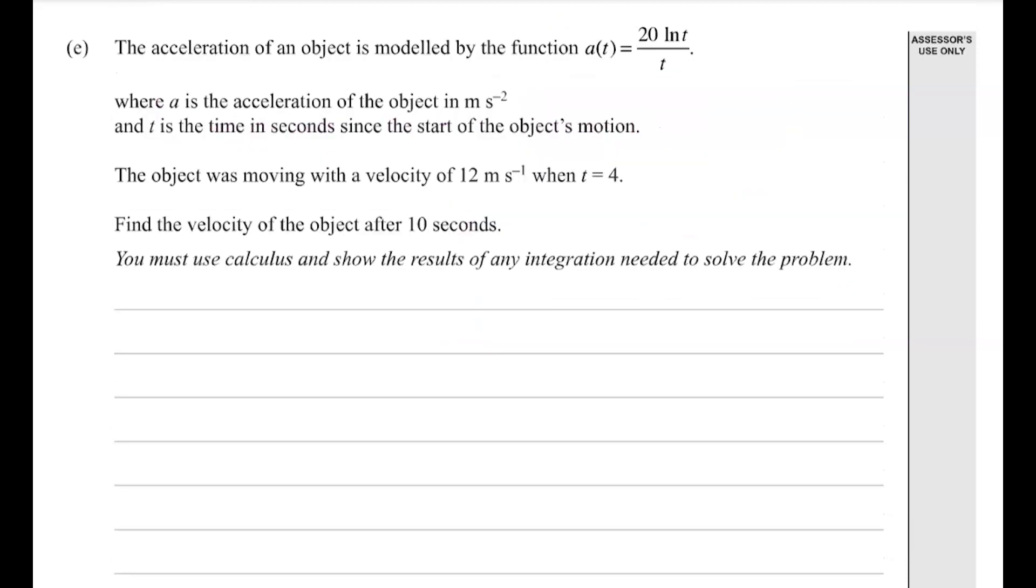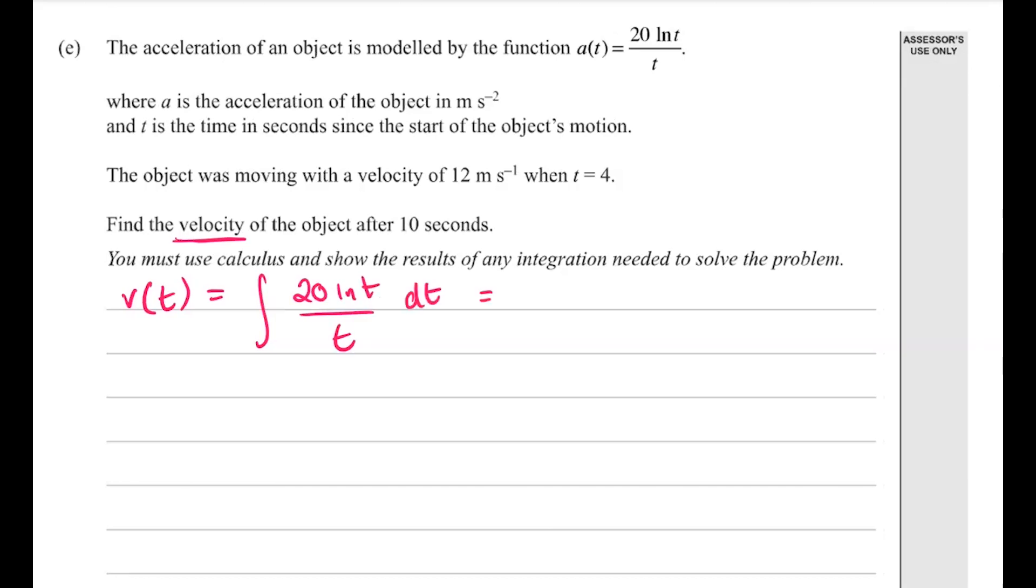Part e we have got kinematics, and we want to find the velocity, so we need an equation for velocity. To get velocity, we integrate acceleration, so we will integrate this 20 ln t over t. Now the tricky thing with this one is recognizing that we've actually got the reverse chain rule here. So this is 20 times 1 over t times natural log of t, where this 1 over t part here is the derivative of the natural log.